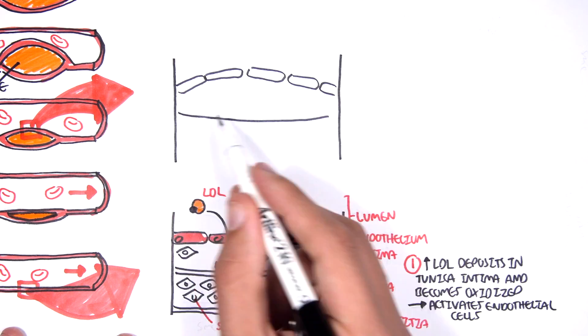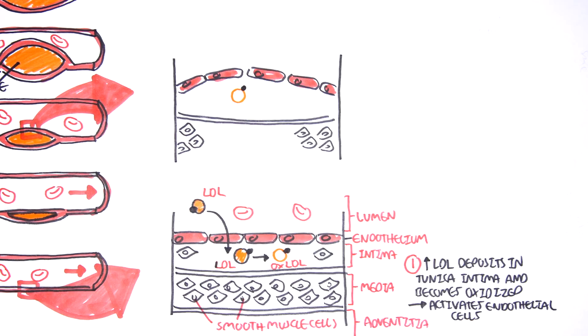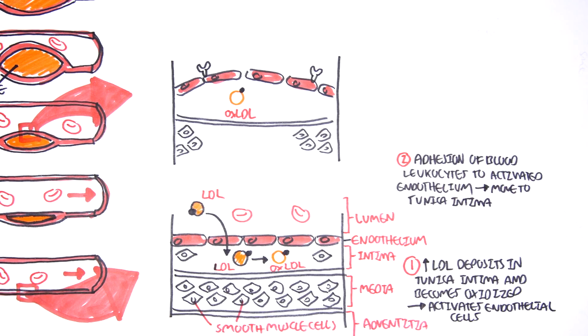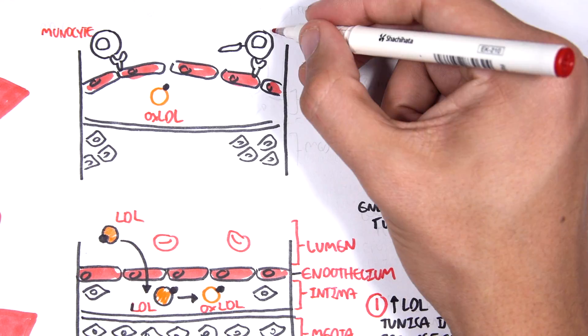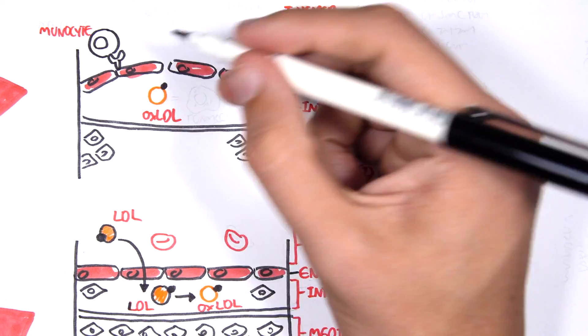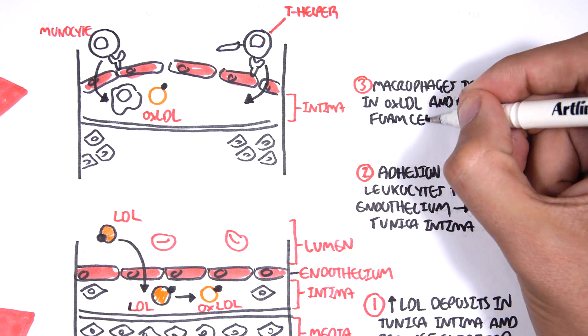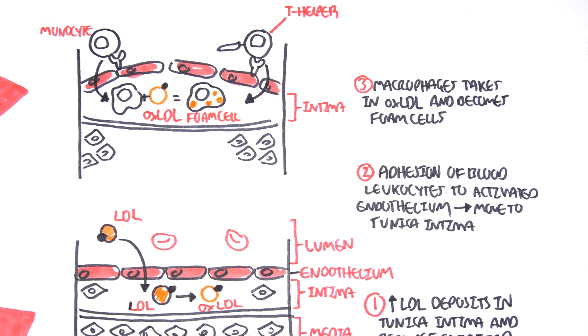So here, I'm drawing the same layers of the blood vessel and we can see there is accumulation of oxidized LDLs, which will activate endothelial cells, which will begin expressing adhesion molecules for white blood cells. Adhesion of blood leukocytes to activated endothelial cells will allow monocytes and T helper cells to move into the tunica intima layer of the blood vessel. When monocytes move into the tunica intima, they will become macrophages and macrophages will then take up these oxidized LDLs and then become foam cells. The foam cells are key in atherosclerosis.